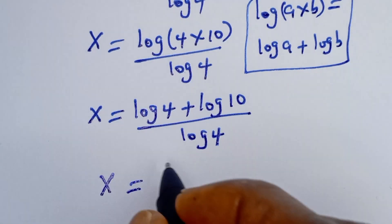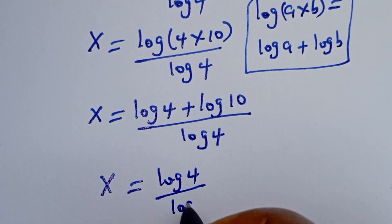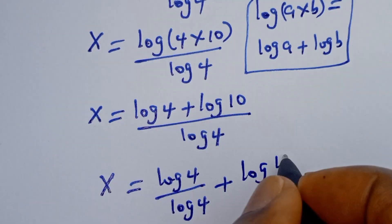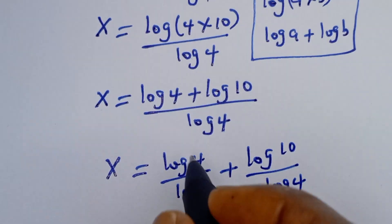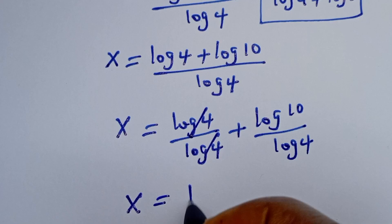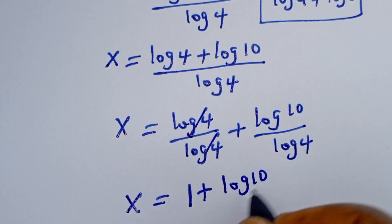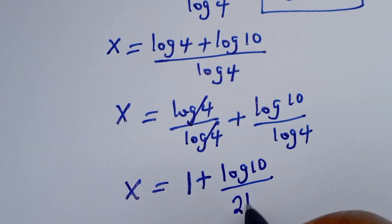Then x is equal to log 4 divided by log 4 plus log 10 divided by log 4. From here this will cancel. x is equal to 1 plus log 10 divided by log 4, which can be written as 2 log 2.